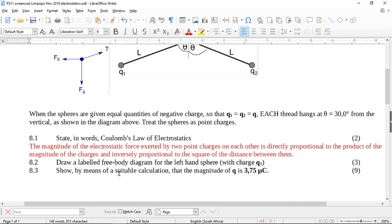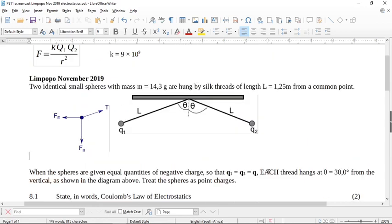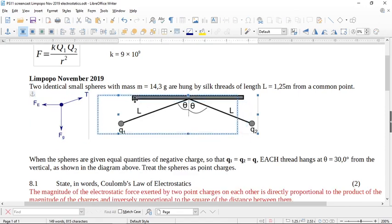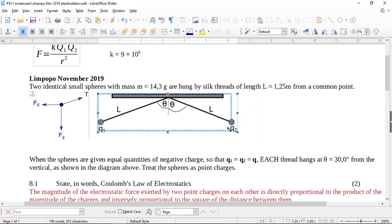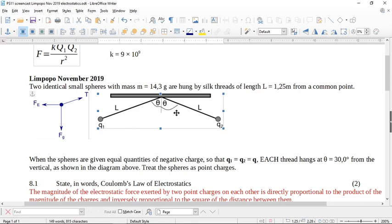Now it says to you, show by means of a suitable calculation that the magnitude of Q is 3.75 microcoulombs. And then you look at this question and you go, hmm. Okay, so the first thing you do whenever you get something that makes you want to go hmm, is go and put as much information from the question on the diagram that you can.